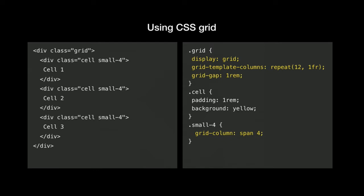But the big difference is that now we're defining the grid itself. If you look at the class Grid in this CSS, we've got a new property: GridTemplateColumns, with the value repeat(12, 1FR). We'll go into what that is in the next slides. And then we're setting a grid gap. At the bottom, we're setting the small-four class to span four columns. The big difference is that now we're not calculating any width — we're just saying we want this to be four columns wide.